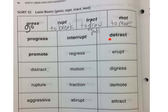Detract. De means away, and tract means draw or pull, so when you detract you pull or draw away from something — like you detract attention. It literally means taking away something, usually by detracting attention from something that should be paid attention to.